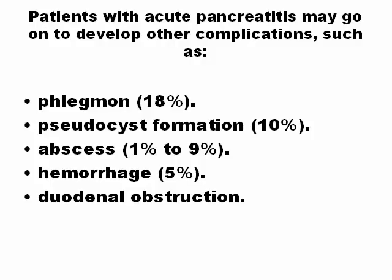There are other complications of pancreatitis: phlegmon, which is an inflammation of the tissue around the pancreas; pseudocyst formation, which is very important — and ultrasound is the device for following the pseudocyst. Remember, it is not a cyst, it is a pseudocyst, not a true cyst. Pseudocyst, abscess when there is an infection, and hemorrhage are all very dangerous complications of pancreatitis, as well as duodenal obstruction. The most important for sonography is the pseudocyst.